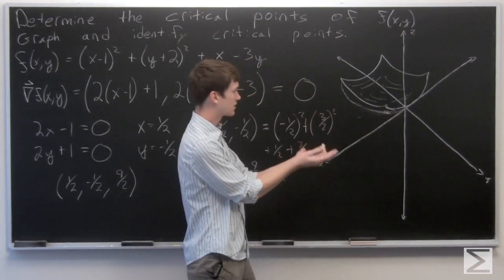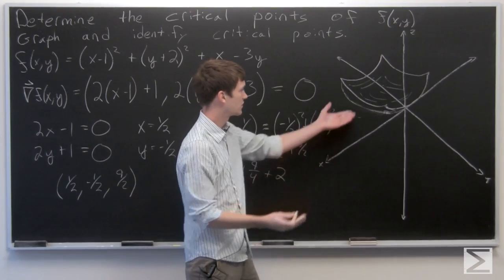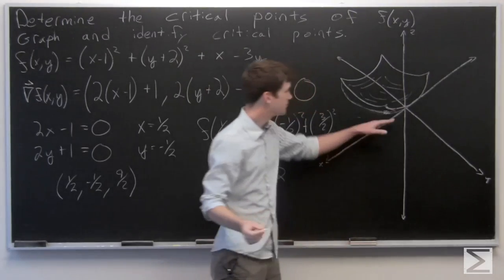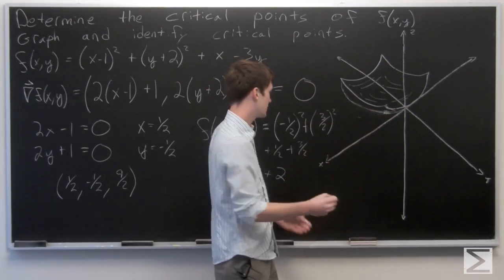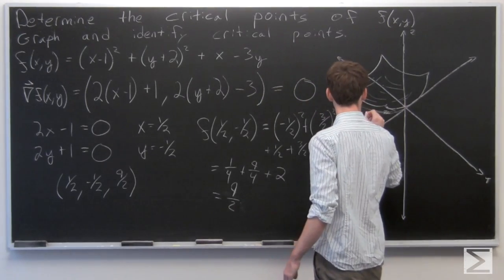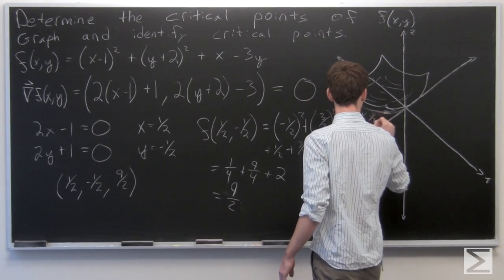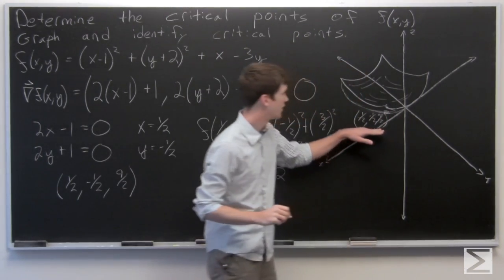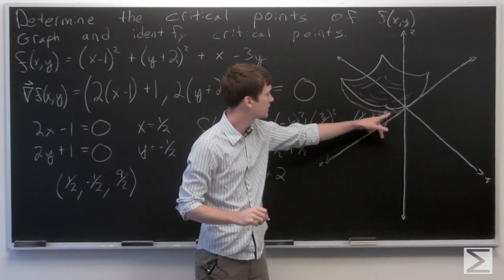So we see that it's kind of an elliptic paraboloid, and our point is the minimum. So this is (1/2, -1/2, 9/2) right here.